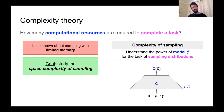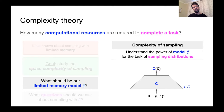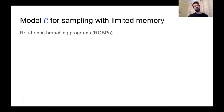Before we do so, I need to answer two questions. The first one is: what should our limited memory model be? And the second one is: what are some interesting questions to ask about sampling with this model? Our model for sampling with limited memory will be the standard model of read-once branching programs, or ROBPs.